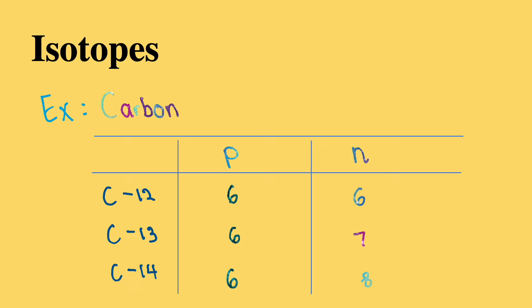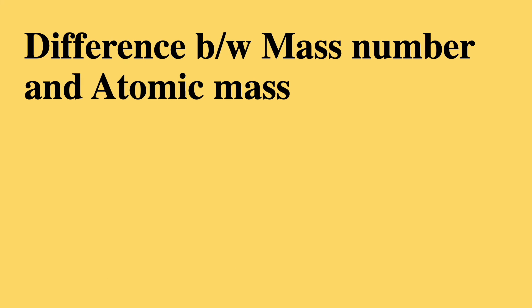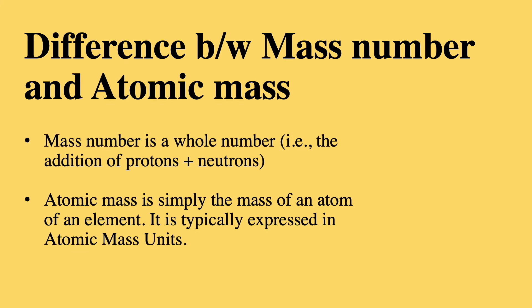Now, you might be thinking, how is mass number different from atomic mass? Essentially, the mass number is a whole number, as described previously as the addition of protons and neutrons.